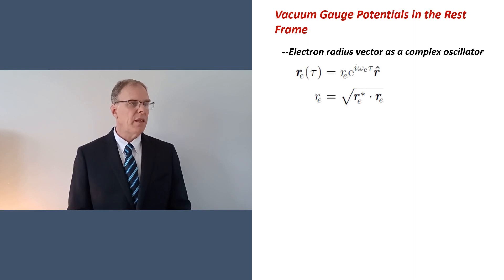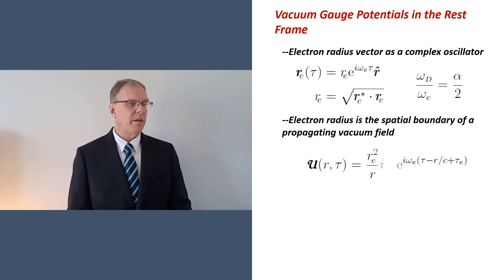Having said that, let's begin in the rest frame with a classical radius in the form of a complex oscillator. The frequency of this oscillator is extremely large, somewhere around 10 to the 23 radians per second, and the ratio of the invariant Dirac frequency to this one is exactly one half the fine structure constant. Let's view this oscillator as the spatial boundary of a propagating vacuum field, which radiates longitudinal spherical waves traveling at light speed.